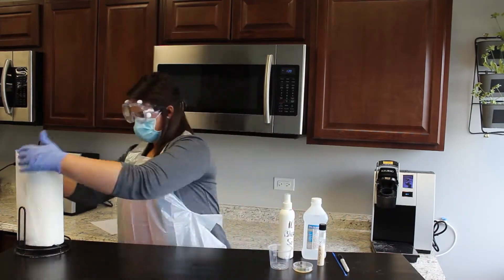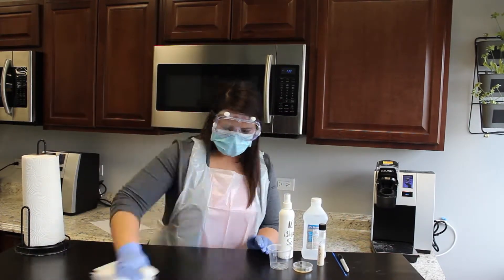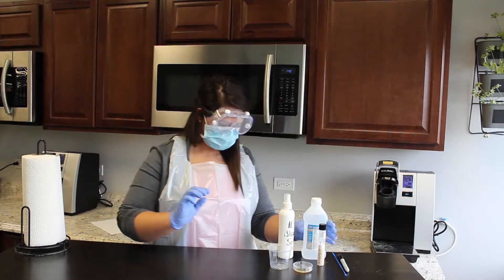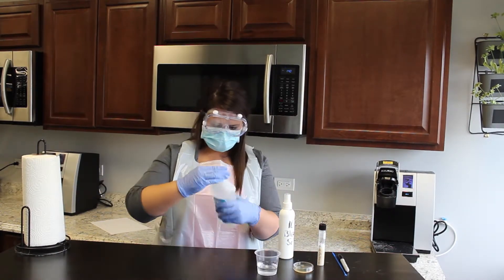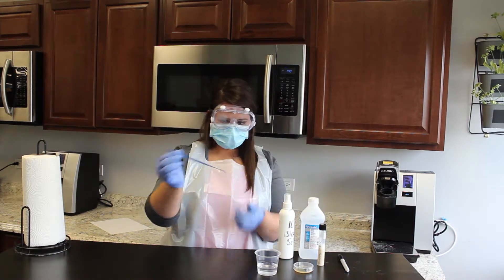Wipe down work surface with 10% bleach solution. Pour isopropyl alcohol into a plastic cup. Place the inoculation loop into the beaker of alcohol.